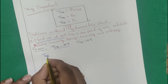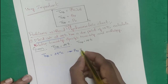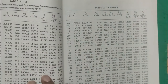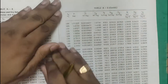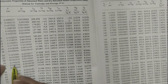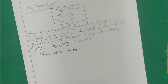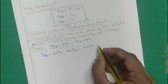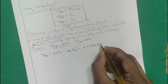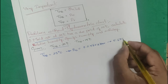Dry bulb temperature = 35°C. From the steam table (temperature table), at 35°C: PVS = 0.056216 bar. Converting to kilopascals: PVS = 5.6216 kPa.